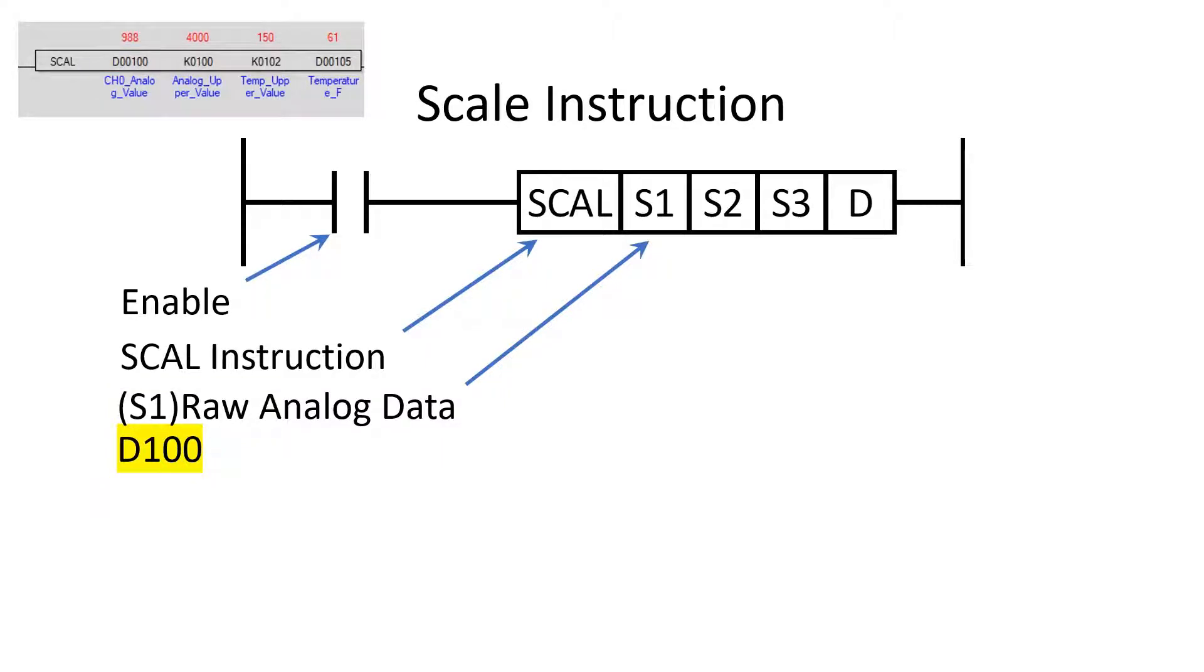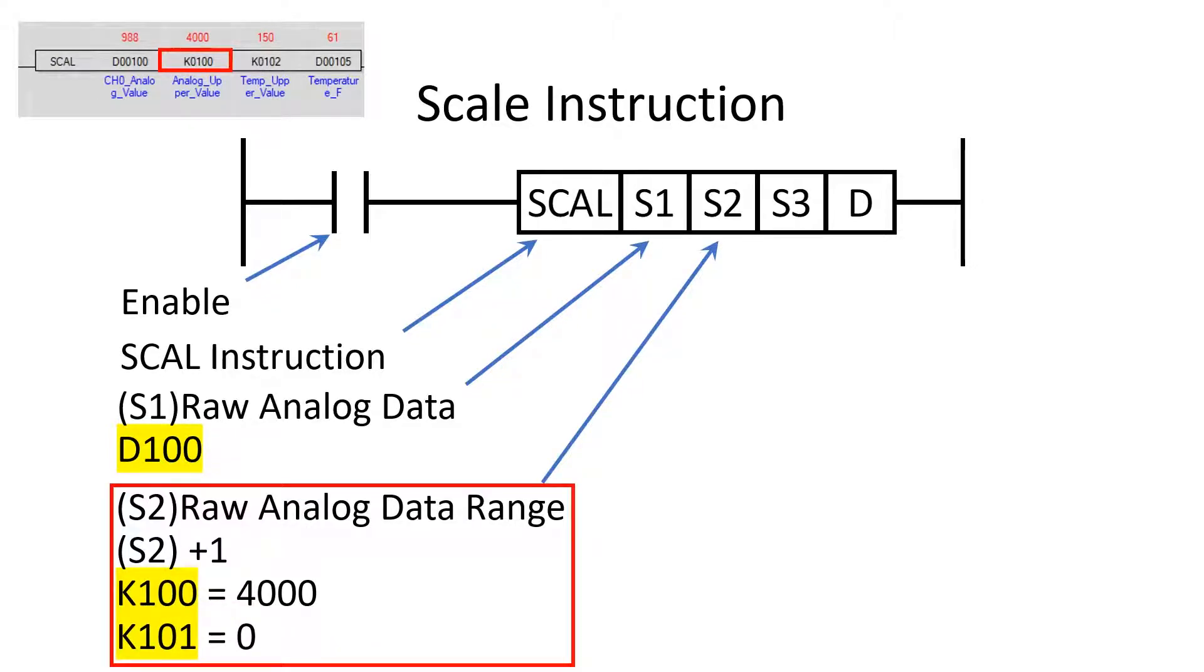Operands S2 and S3 are stored in K memory as this is retentive memory. The S2 operand is the memory location of the upper value of the raw analog range. This analog channel is set up with a max count value of 4000.